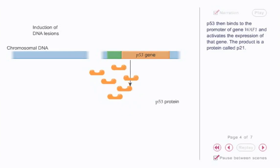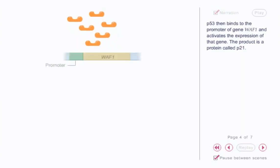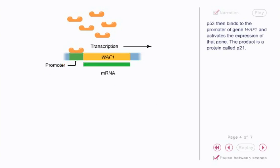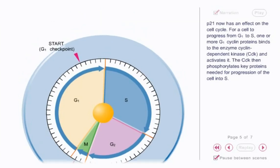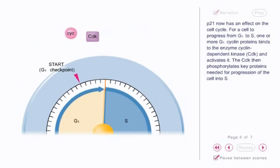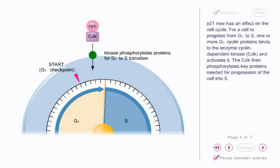p53 then binds to the promoter of gene WAF1 and activates the expression of that gene. The product is a protein called p21. p21 now has an effect on the cell cycle. For a cell to progress from G1 to S phase, one or more G1 cyclin proteins bind to the enzyme cyclin-dependent kinase (CDK) and activate it.